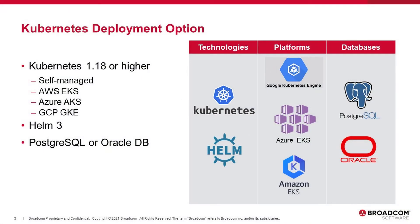Kubernetes deployment option. You now have the possibility to choose between the standard binary deployment or a container-based deployment option. The container-based deployment option lets you deploy to a self-managed Kubernetes cluster or to a managed Kubernetes service offering by any of the leading cloud providers, enabling all the benefits of Kubernetes and its ecosystem while greatly reducing operational complexity around deploying, scaling, and updating Atomic Automation instances.